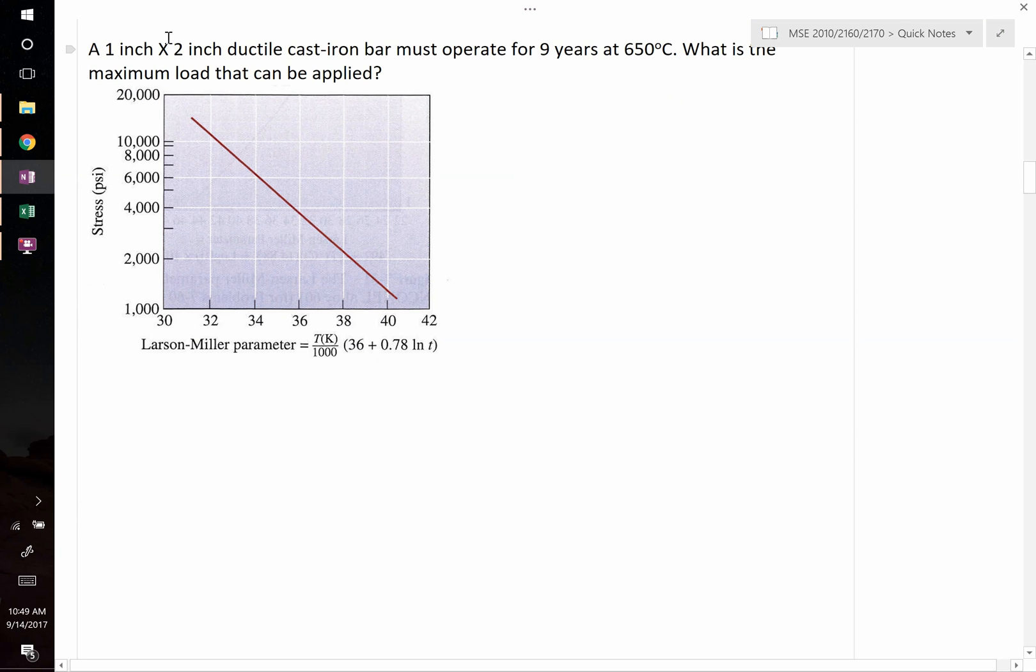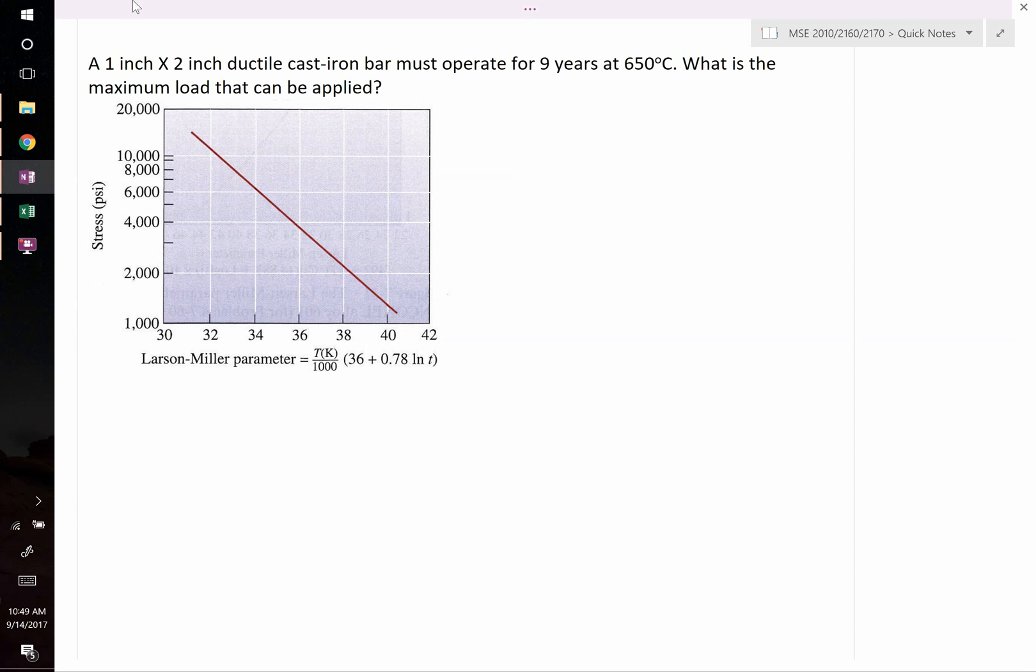For this question we're told that a 1 inch by 2 inch ductile cast iron bar needs to remain in operation for nine years at a temperature of 650 degrees Celsius. We're then asked to determine what is the maximum load that we can apply to this component.